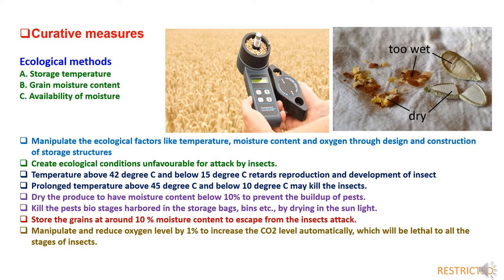Dry the produce to have moisture content below 10% to prevent the building up of pests. Kill pest life-stages in storage bags and bins by drying in sunlight. Store grain at around 10% moisture content to escape from insect attack. Manipulate and reduce oxygen level to 1% to increase carbon dioxide levels automatically, which will be lethal to all life-stages of insects.